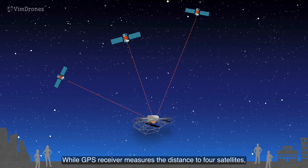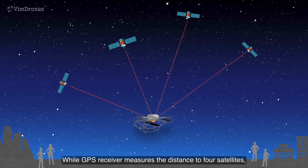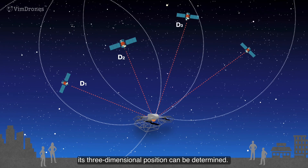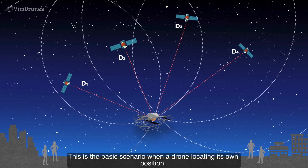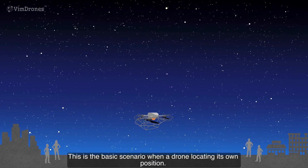While a GPS receiver measures the distance to four satellites, its three-dimensional position can be determined. This is the basic scenario of a drone locating its own position.